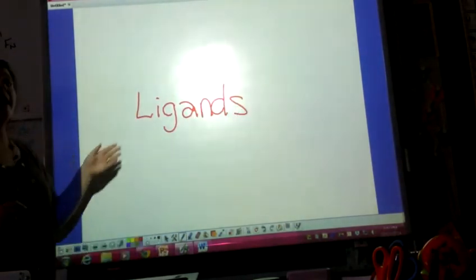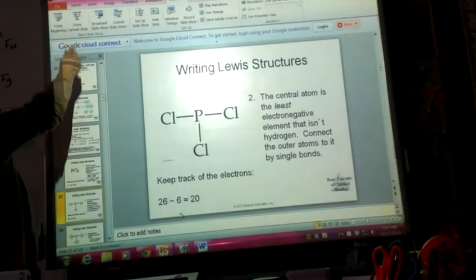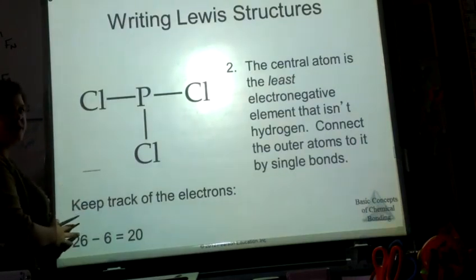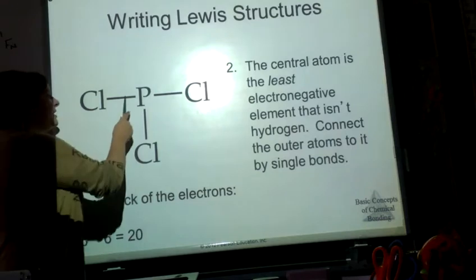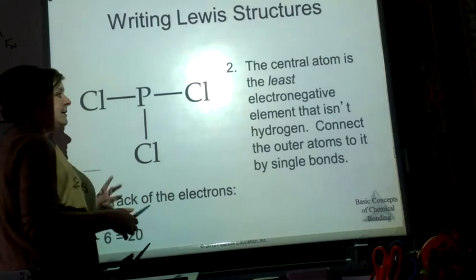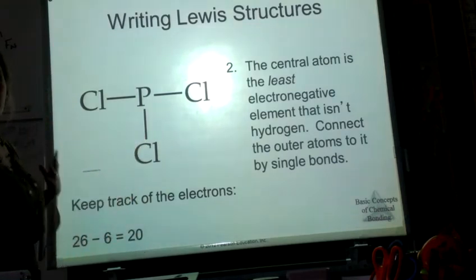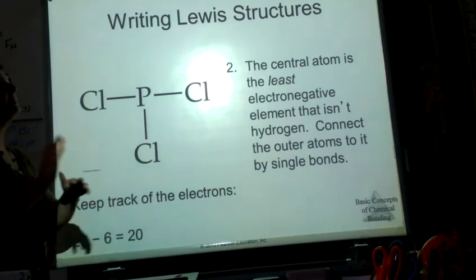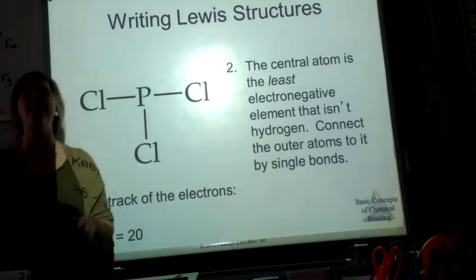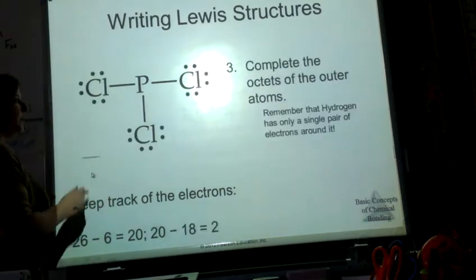The outer atoms connected to the central atom can be called outer atoms or ligands — either term is fine. Now I'm keeping track of valence electrons, because each single bond represents two electrons. For PCl₃, I have six electrons already shown in my structural model, and my goal is to account for 20 more, since we said we had 26 total.